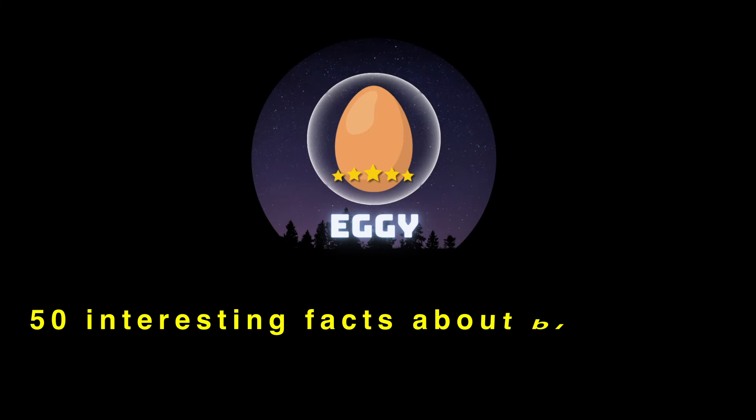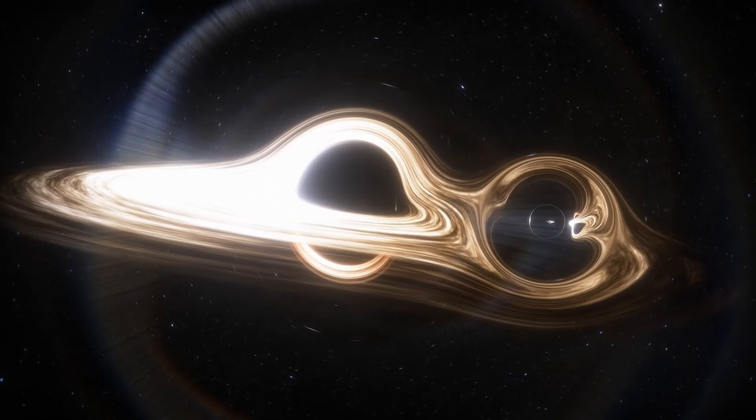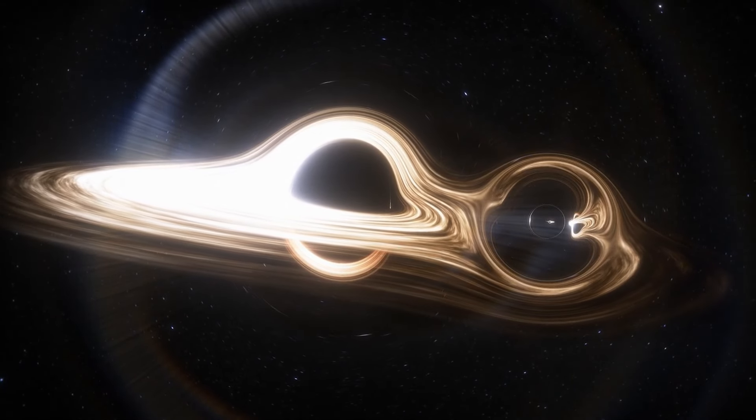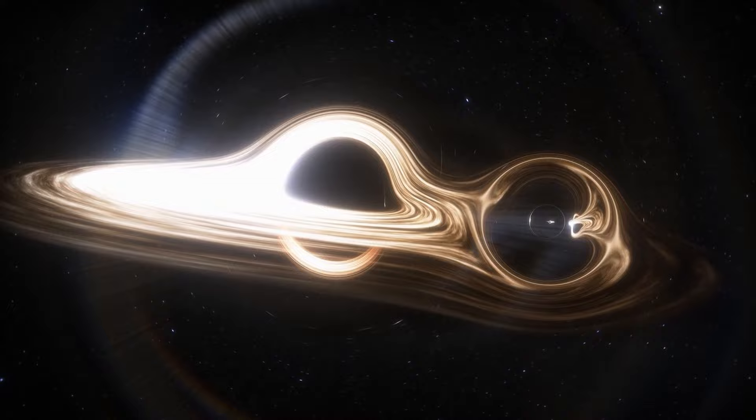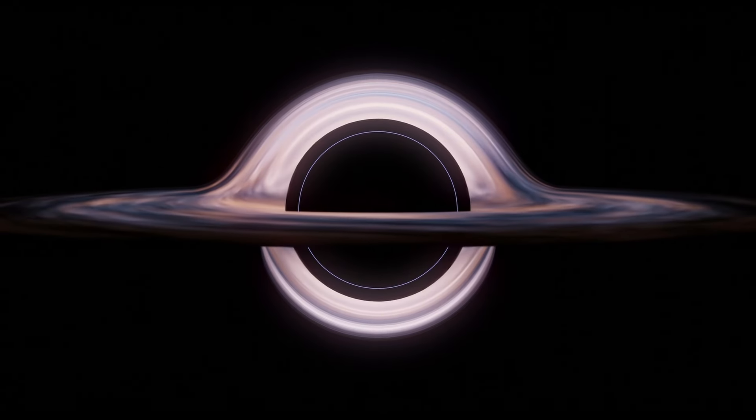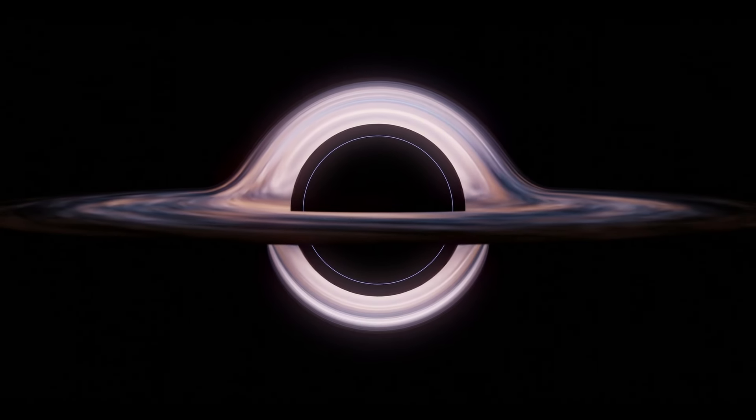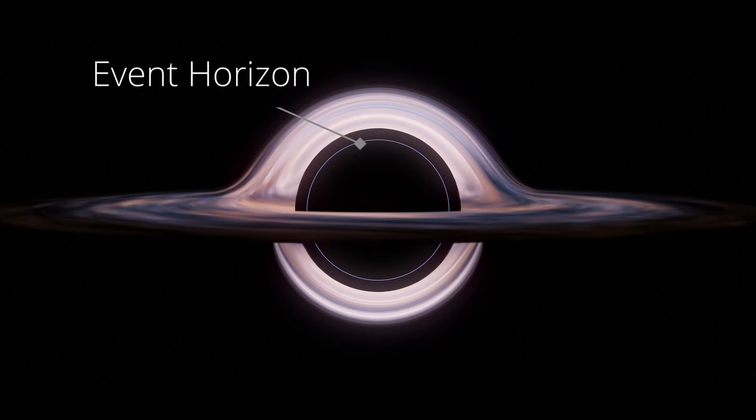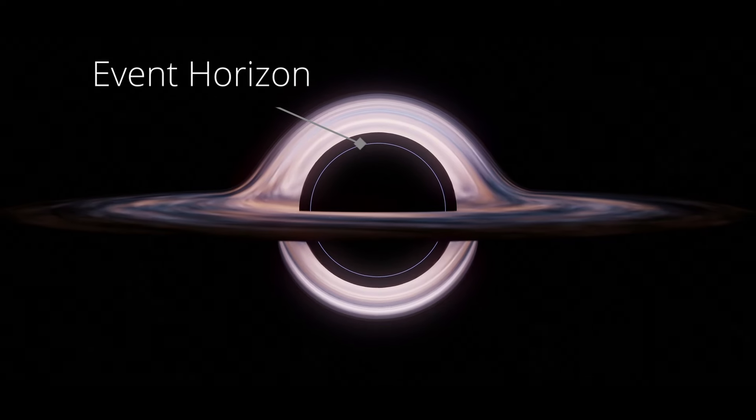Hi, I'm Eggie, and here are 50 interesting facts about black holes. Black holes are regions of space where gravity is so strong that not even light can escape. There is a boundary around a black hole beyond which nothing can escape. It is called the event horizon.